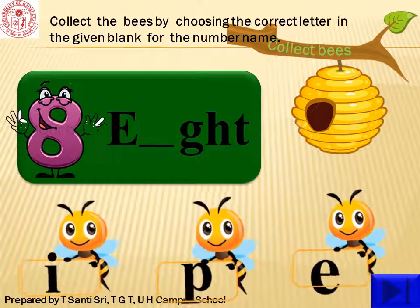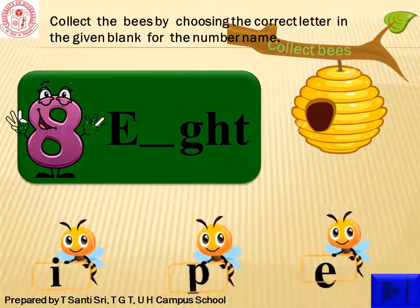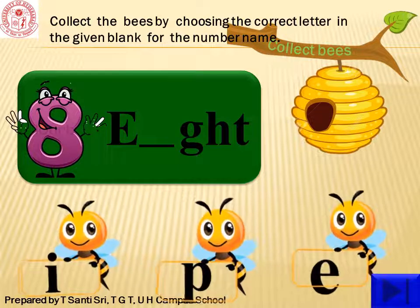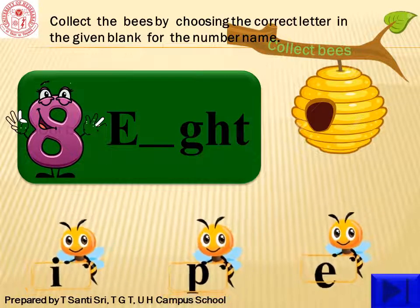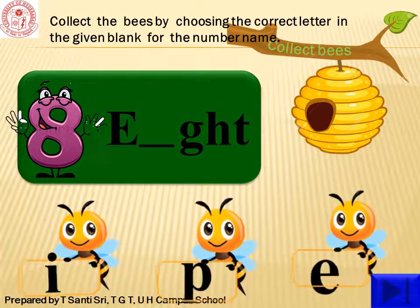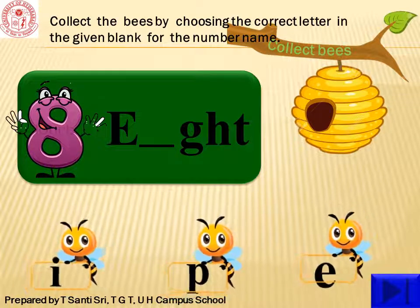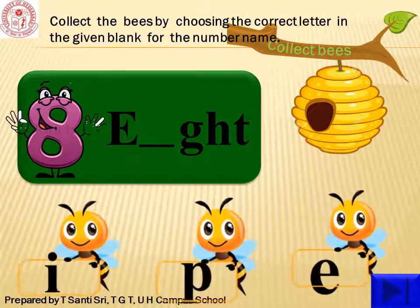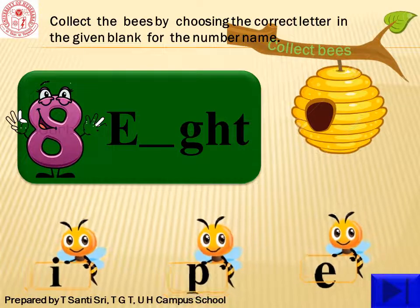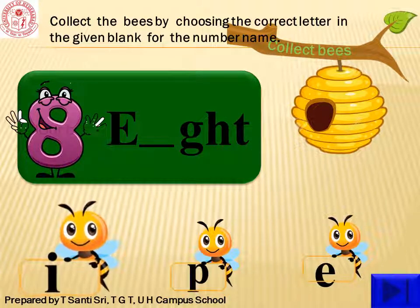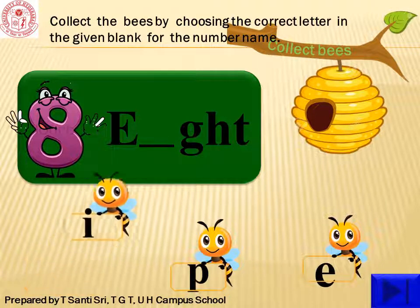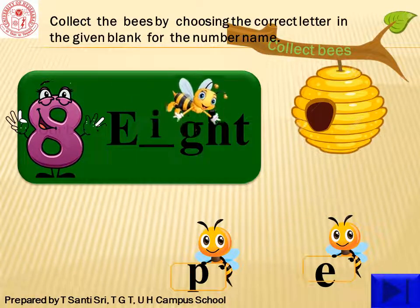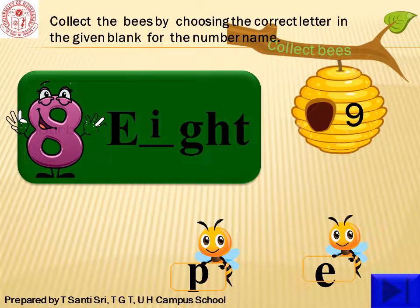Children, did you identify the number here? Yes, it's 8. Do you know the spelling? E-I-G-H-T. Which letter will come in this blank? Yes, it's I. E-I-G-H-T, 8. Repeat once again: E-I-G-H-T, 8.